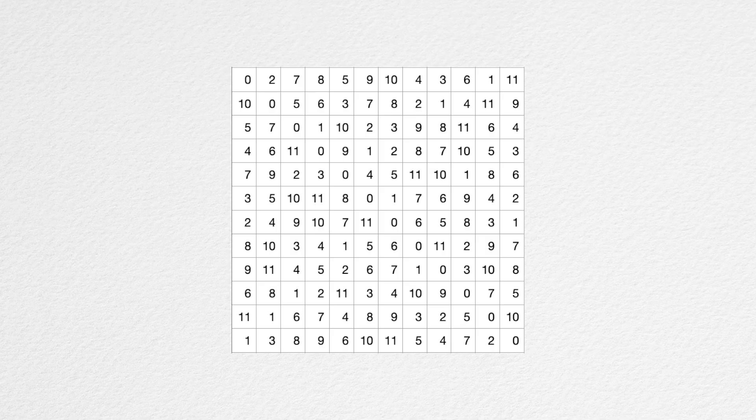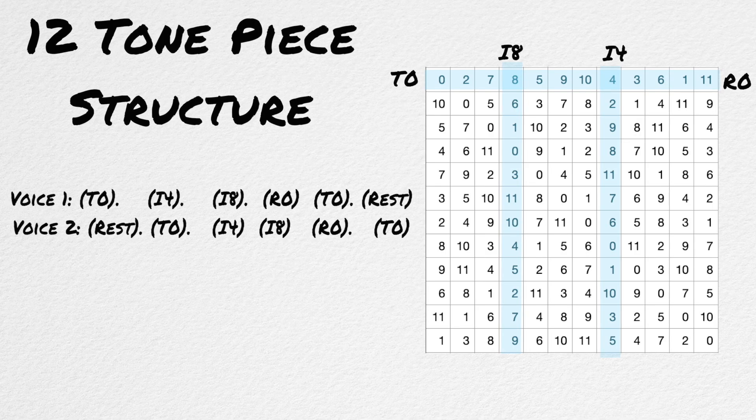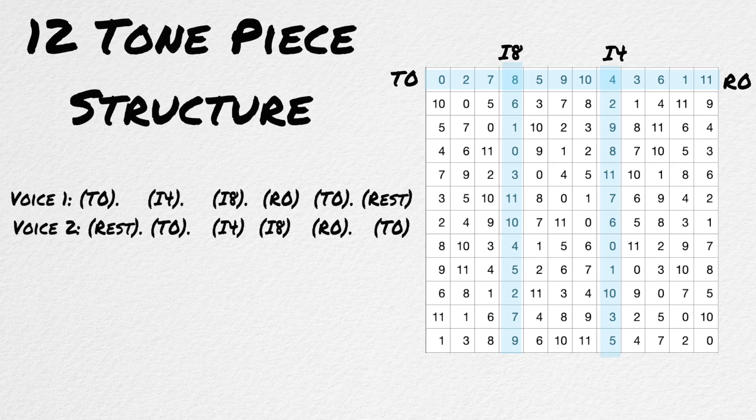So let's use some of this info and write a short 12-tone piece. My piece will be two voices, and the voices will be doing this. Voice 1 will play a theme of T0, and voice 2 will rest. And then voice 2 will take over T0, and voice 1 will play I4, and will continue in a canonic structure.